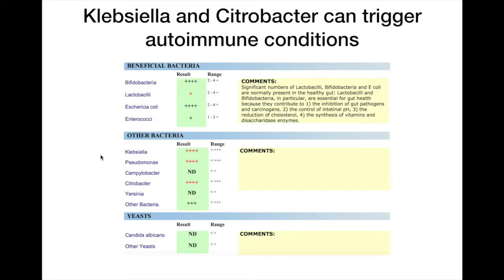Here's another example of a client with autoimmune conditions. Klebsiella and citrobacter are both connected to autoimmune conditions. Identifying this underlying cause could not only help with their digestion problems, but also their chronic health issues as well.